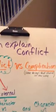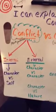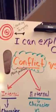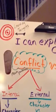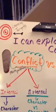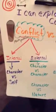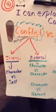Once we've identified that main conflict, we look at it and ask: is the conflict internal or external? There are those two types — internal versus external. If it's an internal conflict, it's a clear choice. It's simply character versus self.